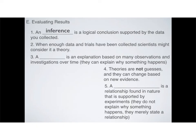Our final step in the scientific method is finally to evaluate our results, and so there are a couple of things we need to talk about there. The first of which is called an inference. An inference is a logical conclusion supported by the data that you collected. We are going to be writing inferences. Those are our conclusions that we write in scientific lab reports.